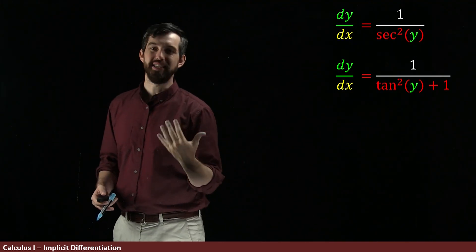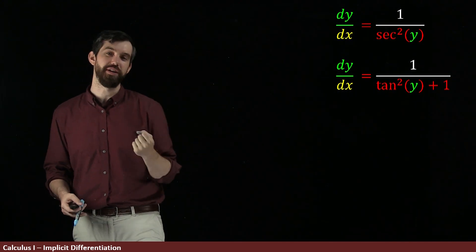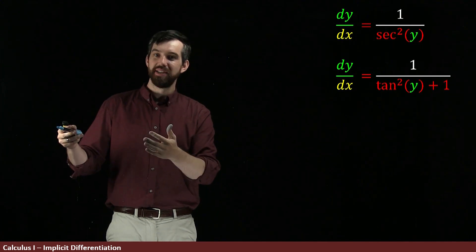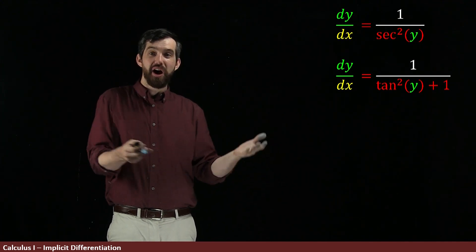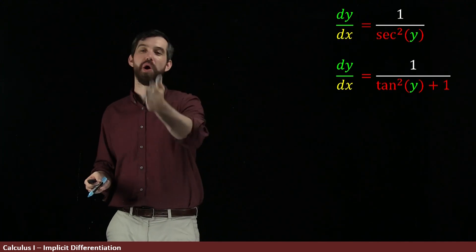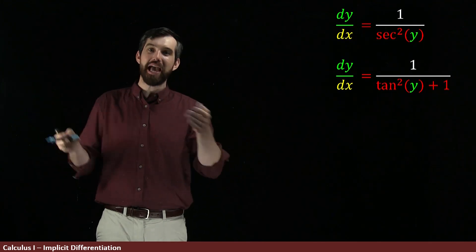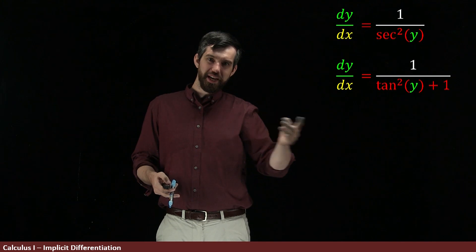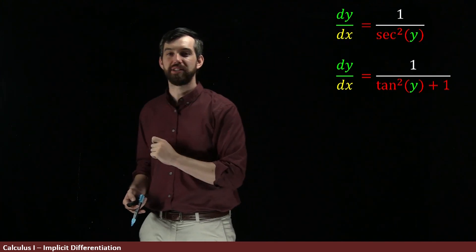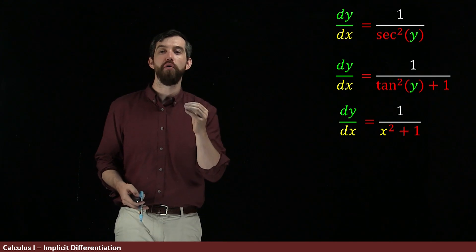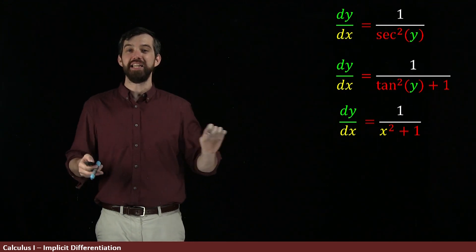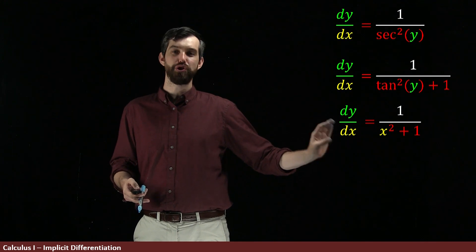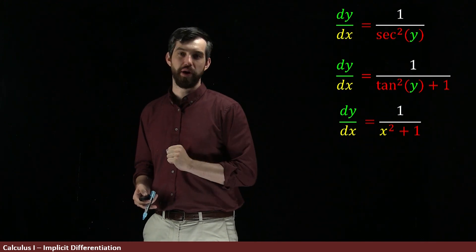Now the reason why I did this, the reason why I wanted it to be back in terms of tangent, is that we know about the relationship between x and tangent of y. Indeed, our defining property was y was arctan of x, which is the same thing as x is tangent of y. So in other words, this tangent of y that I have is just x. So I can say that this is 1 over x squared plus 1. And indeed, this is the final answer, this is the derivative of arctan. It is a function of x, 1 over x squared plus 1.